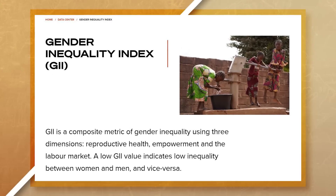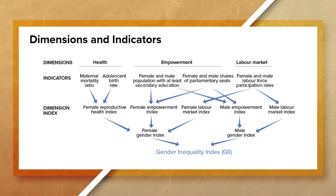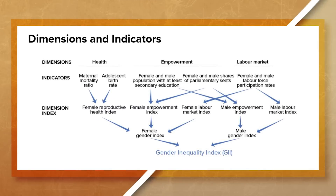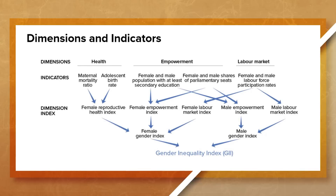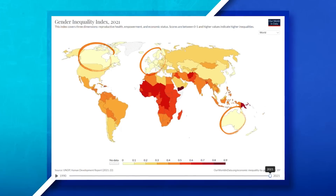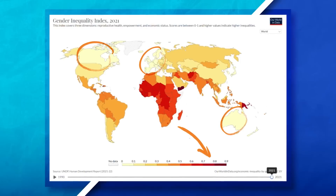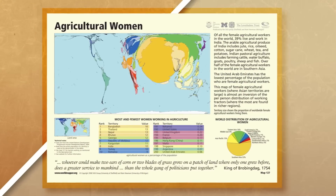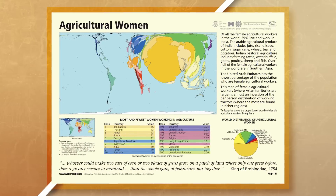To better understand the development of a society and gain insight into women's opportunities, we can look at the Gender Inequality Index. This index measures reproductive health, empowerment, and labor market participation to illustrate the amount of inequality in a country. Countries with a lower GII have less inequality between genders, while countries with a higher GII have more inequality. Looking at regions such as Southwest Asia or Sub-Saharan Africa, we can still see inequality between genders, where women often still make up a large percentage of the agricultural workforce.